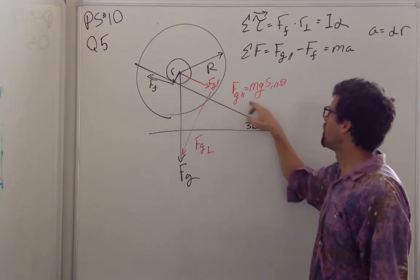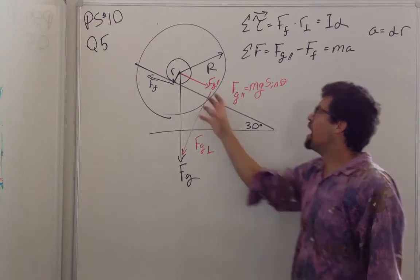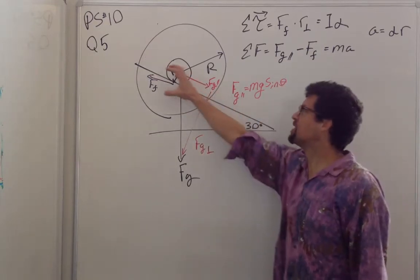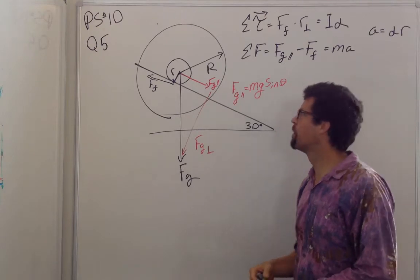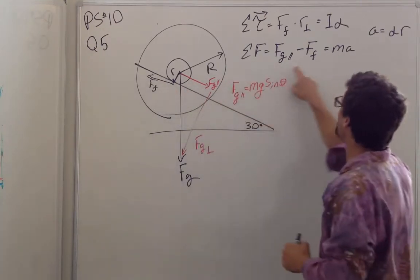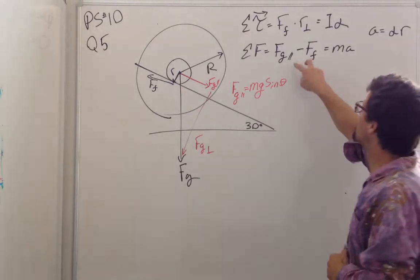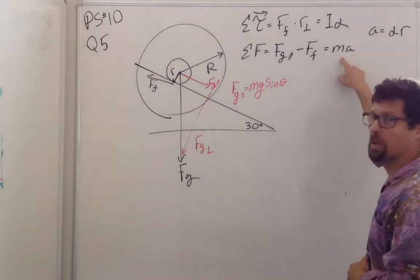The force of gravity parallel pulls us down at mg sine theta, sine of 30 is one-half. This is not frictionless. This does not slide down with an acceleration of five meters per second squared. We need to recognize that the frictional force is pulling upwards, and it's a difference of gravity parallel to the frictional force that provides your acceleration.